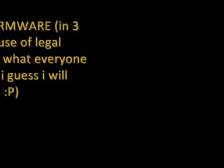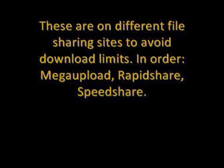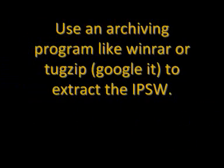Now let's get to the goodies. The iPhone 3G firmware is in 3 parts for legal reasons. Part 1: 10-year-old.com weblink. Part 2: 10-year-old.com weblink. Part 3: 10-year-old.com weblink. These are on different file sharing sites to avoid download limits — in order: MegaUpload, RapidShare, SpeedShare. Use the Firefox add-on SkipScreen to avoid waiting time. Use an archiving program like WinRAR or DugZip — Google it — to extract the IPSW.